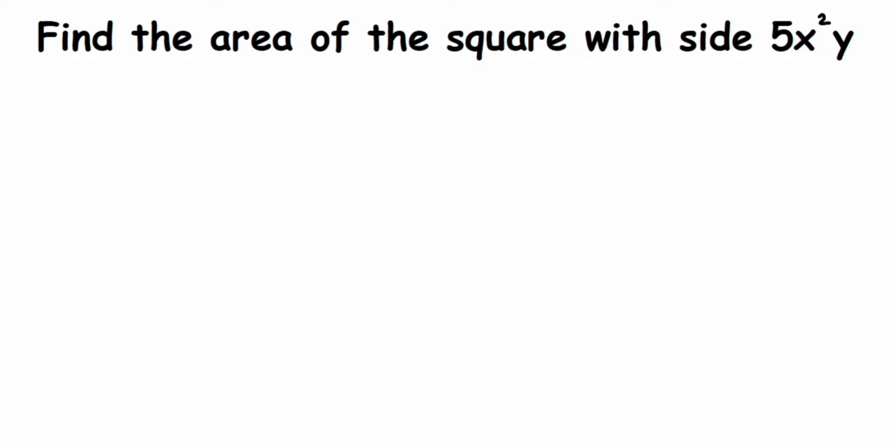Before we solve this, let us know what is the formula for area of a square. Area of square is nothing but side times side, so let us write that down. Area of square equals side multiplied by side.